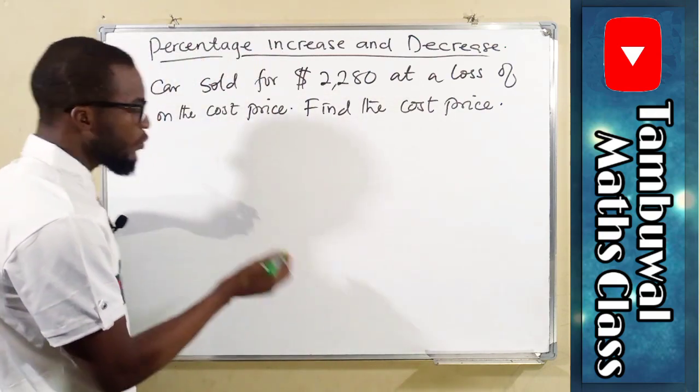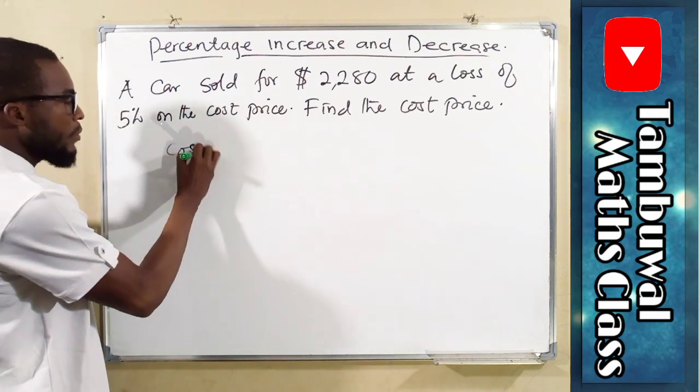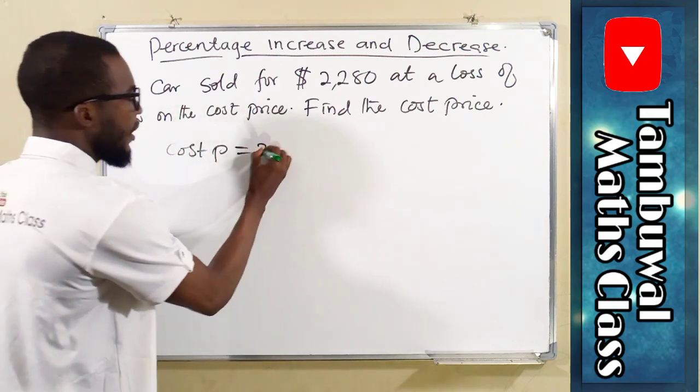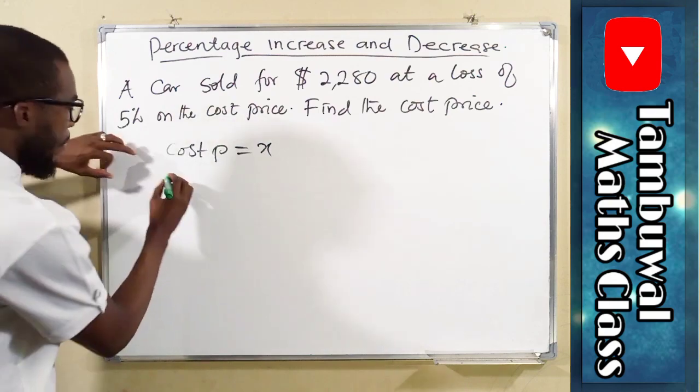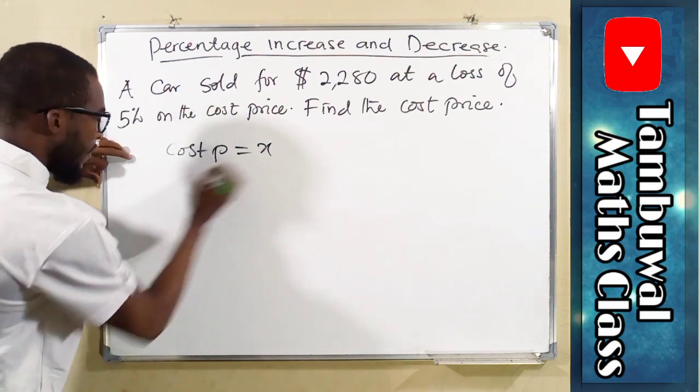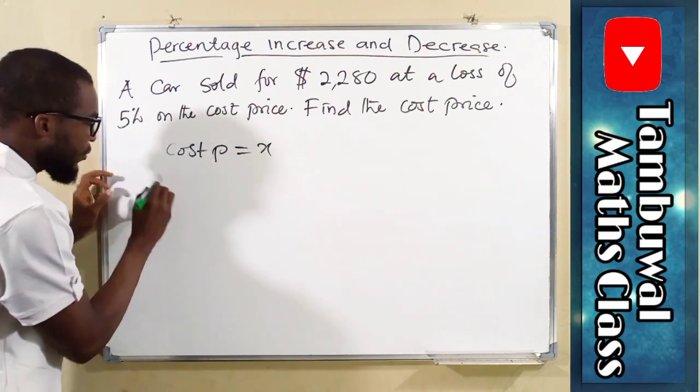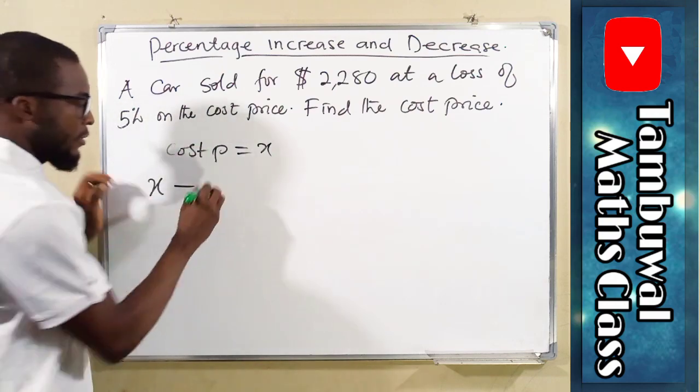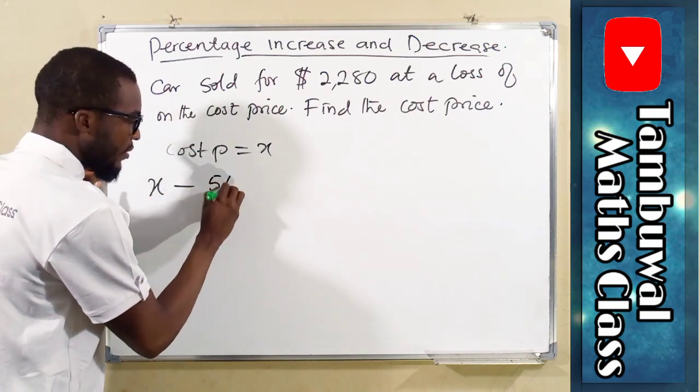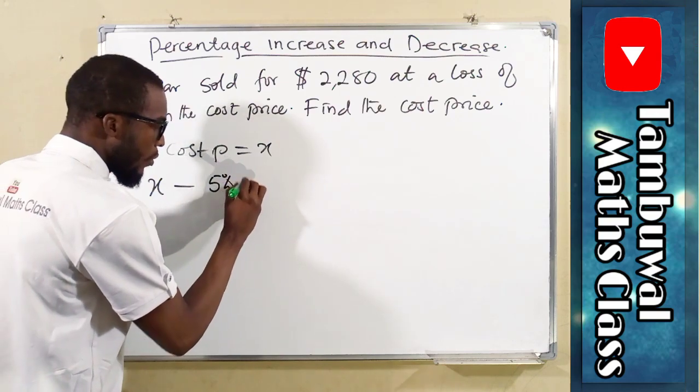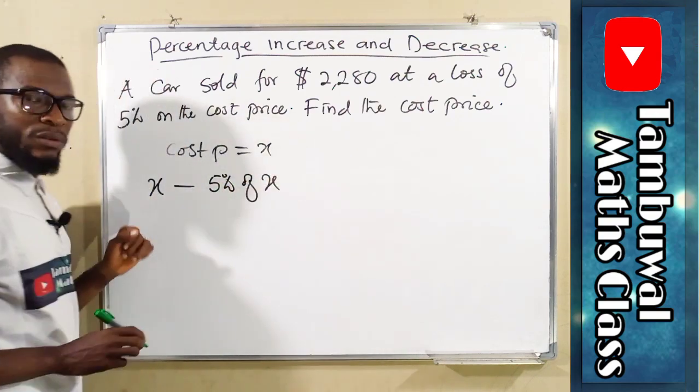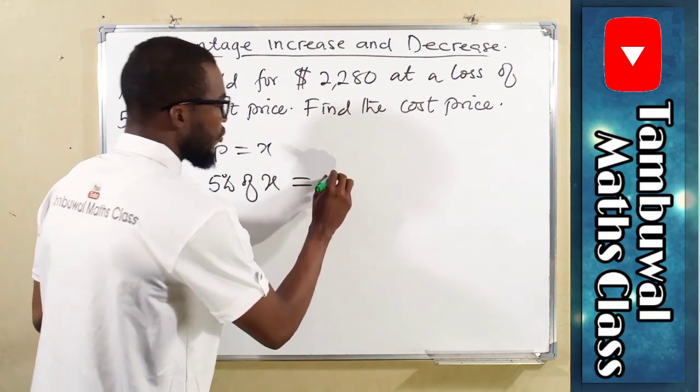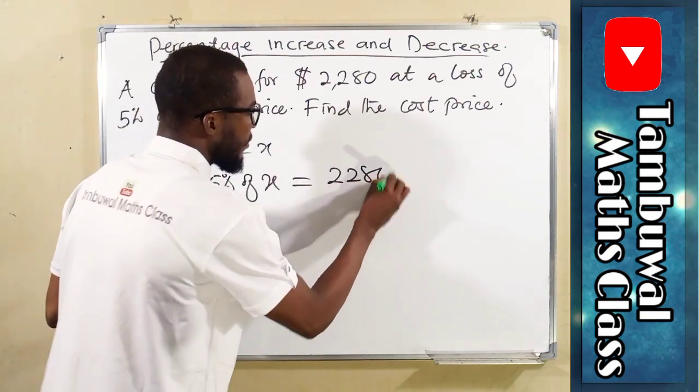So we don't know the cost price, so we can let it be equal to x. This is the original price, which is x. So we have to subtract 5% of that amount to get 2,280.